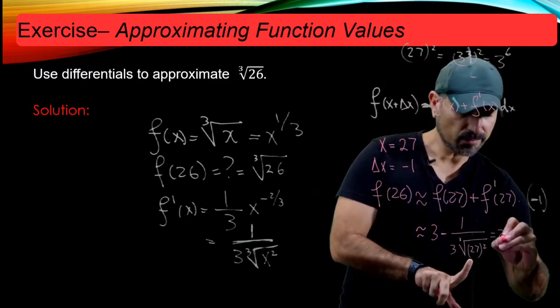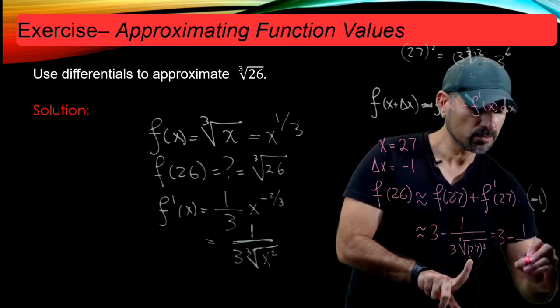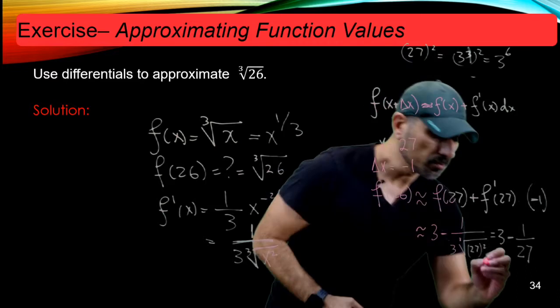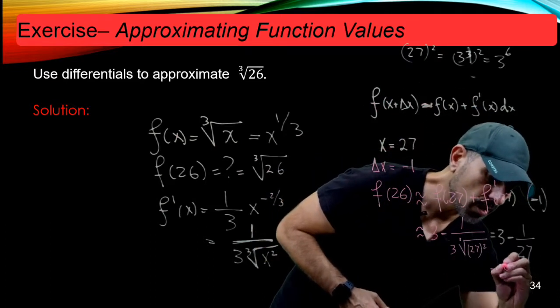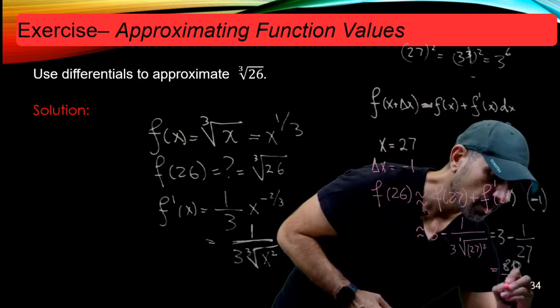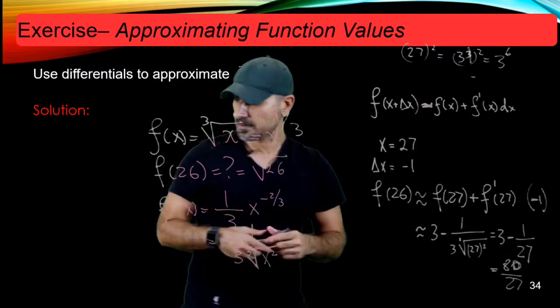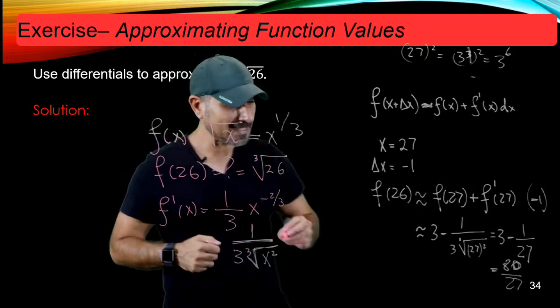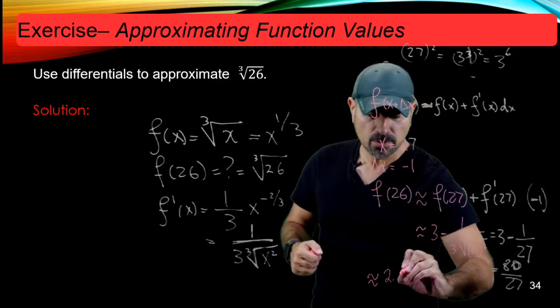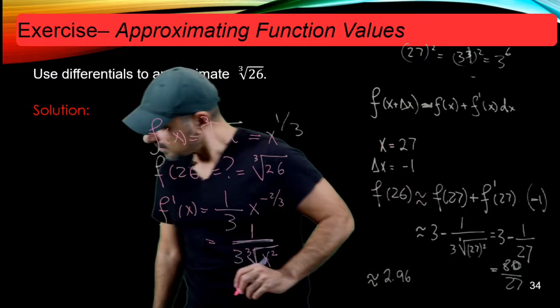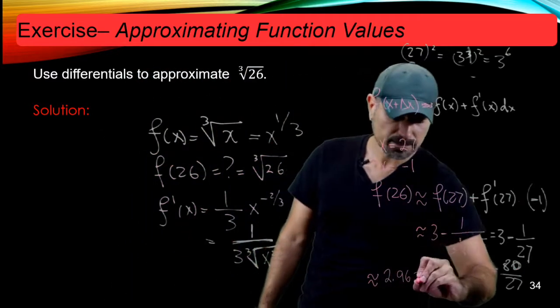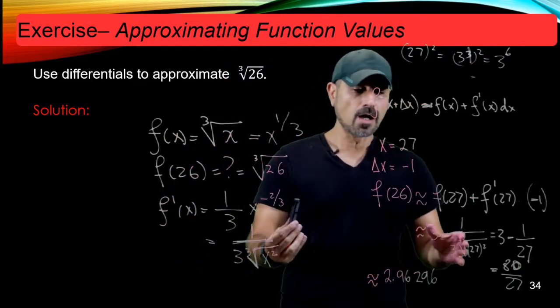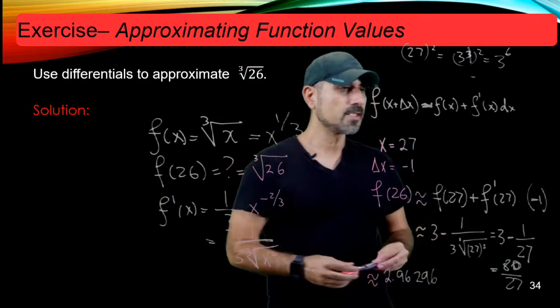So this is 3 minus 1 over 27. And in short, you can combine these two terms into one and you can write it as 80 divided by 27. 80 divided by 27 is approximately equal to 2.96296. This is what we obtain without using a calculator.